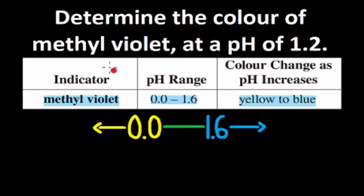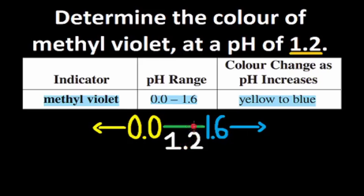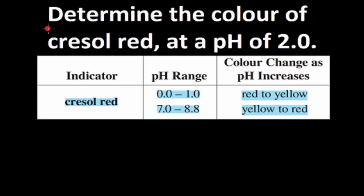The problem wants us to determine the color of methyl violet at a pH of 1.2. A pH of 1.2 is not greater than 1.6, it's not less than 0.0, it's in between 0.0 and 1.6. And since the pH is in between, that means the color of methyl violet will be green.